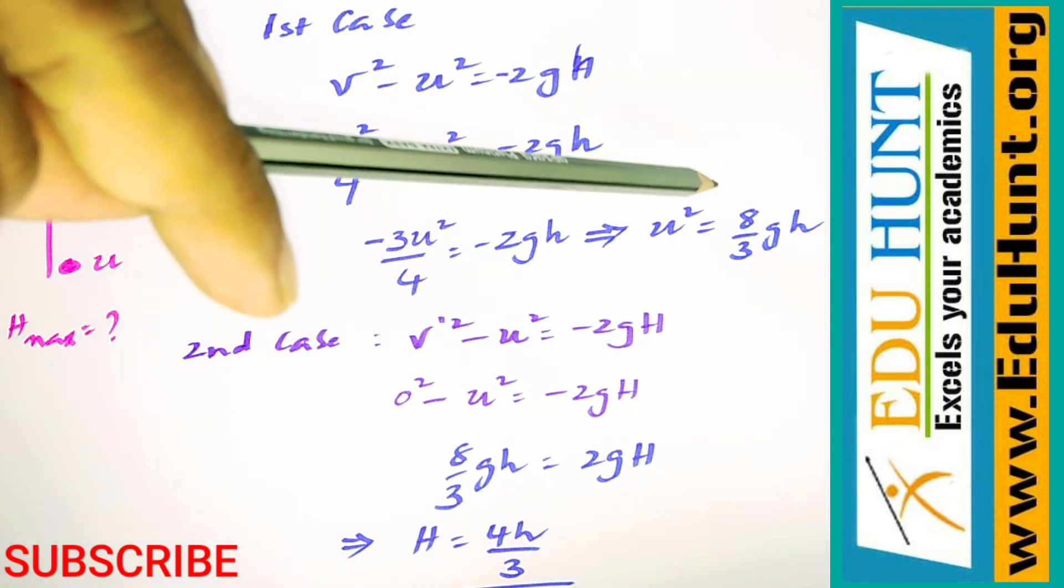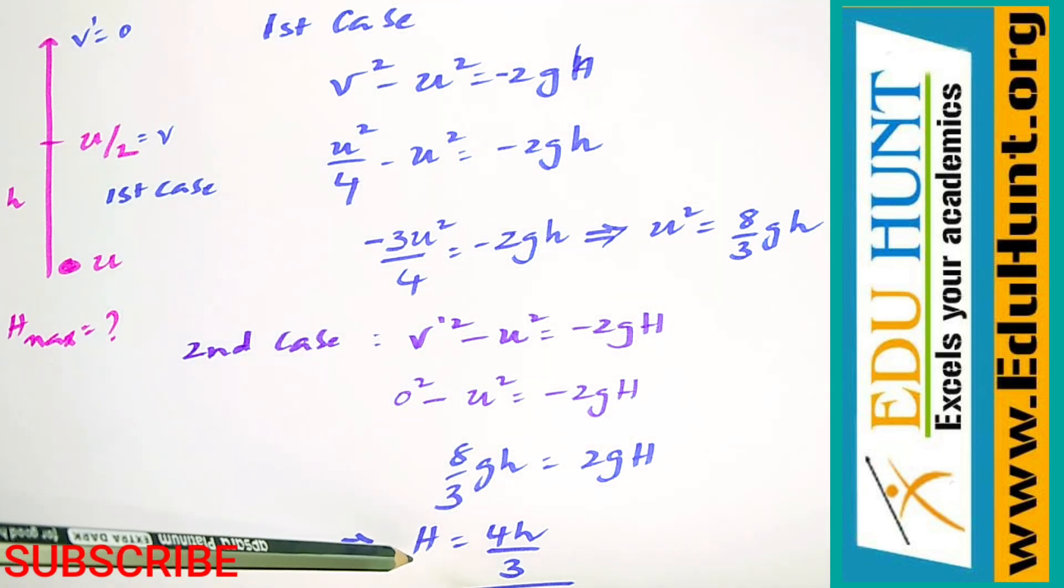0² - u² = -2gH. u² is already found here. I am going to substitute that. From that I got H_max = 4h/3.